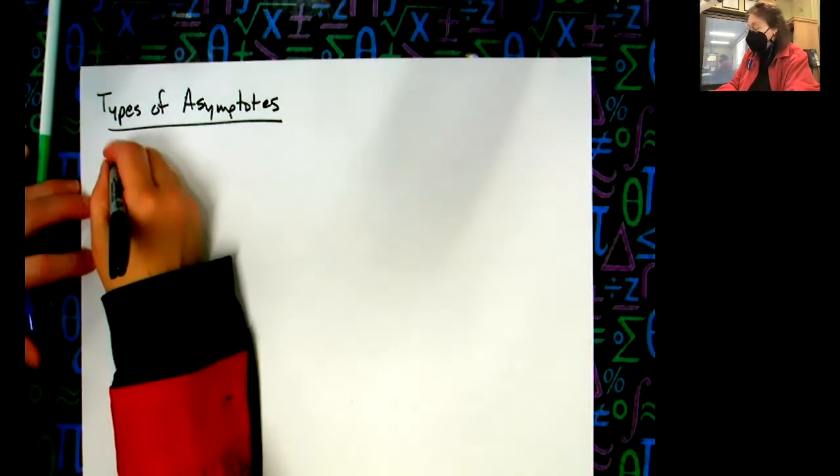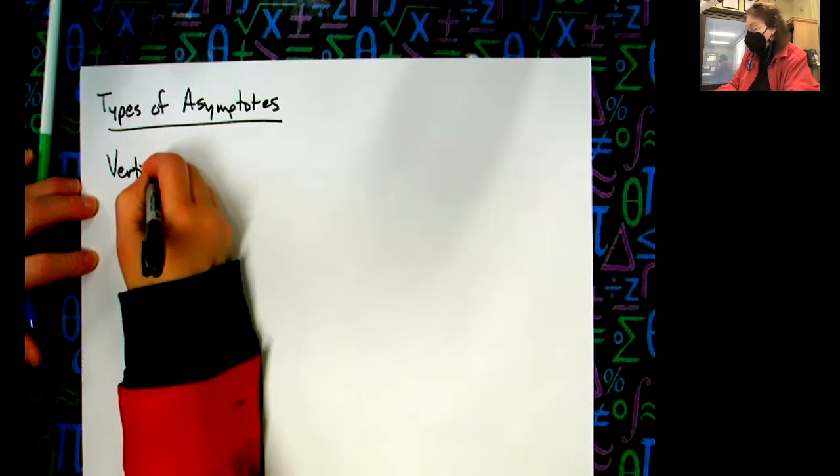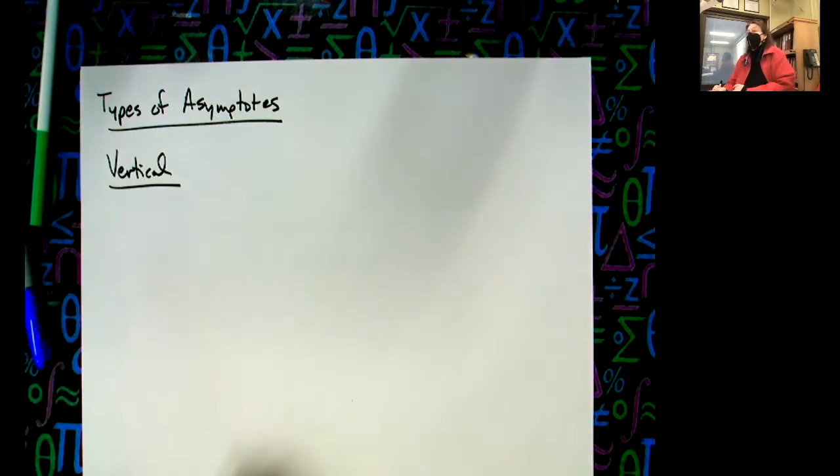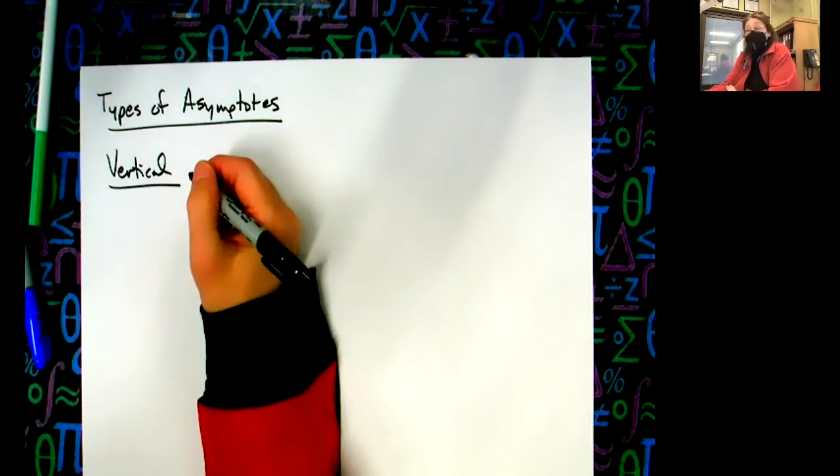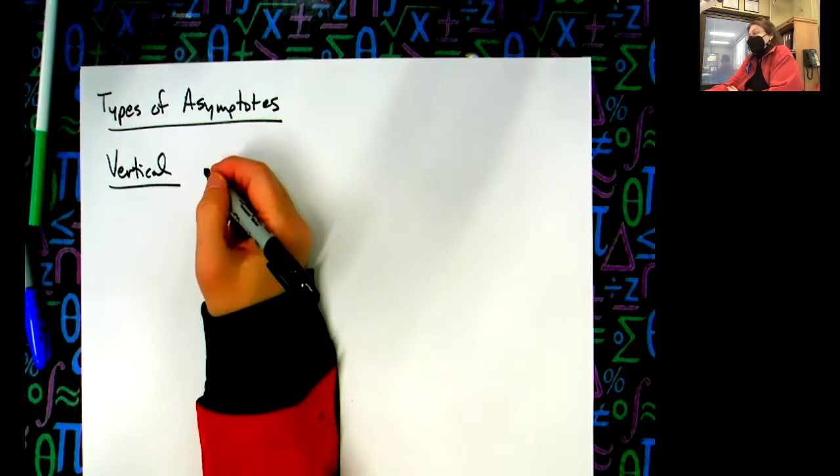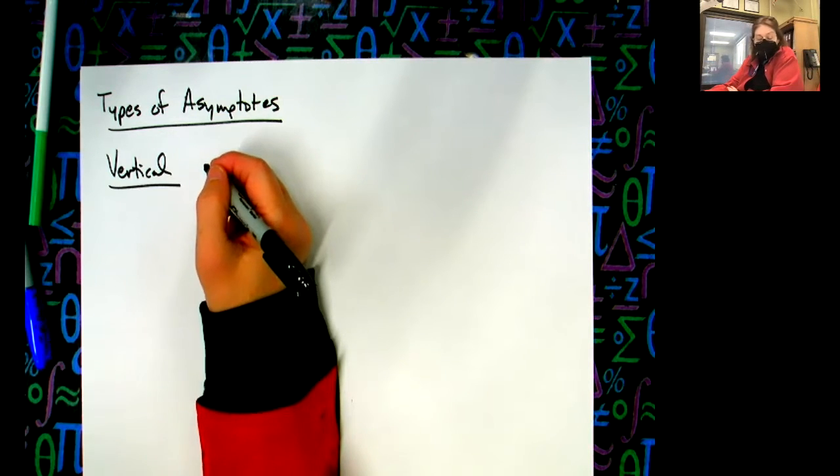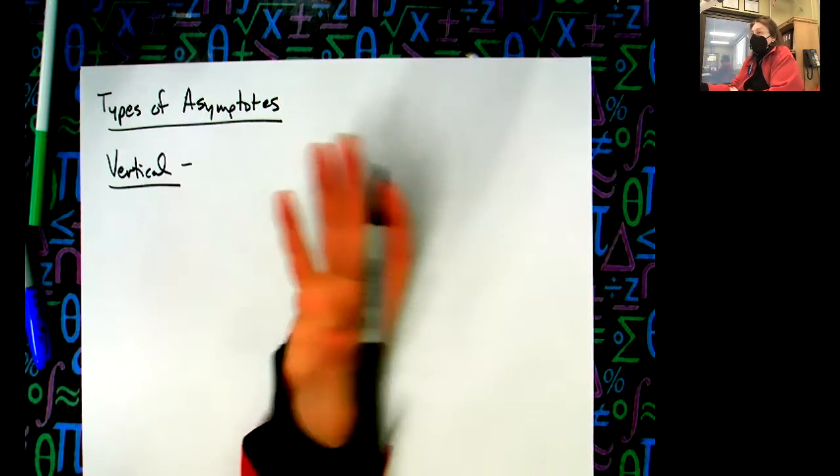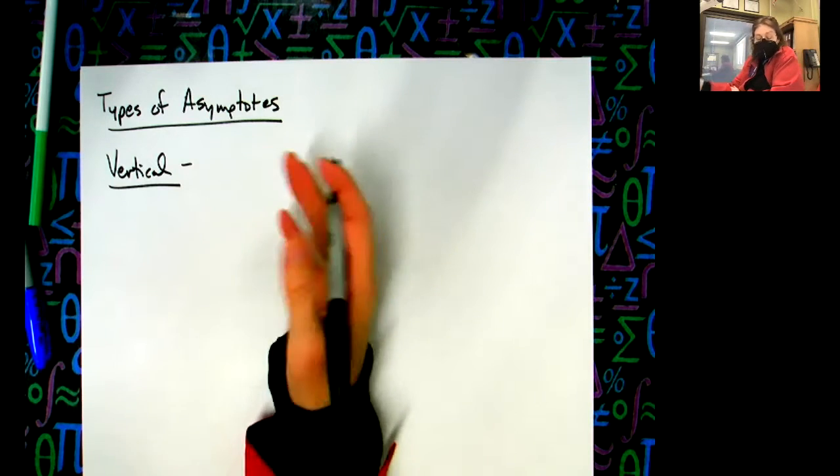All right, we've got three types of asymptotes. We have vertical ones that go up and down. When we've drawn these in our rational functions, we've sketched them, but we've never talked about them other than what the function does in relationship to them.